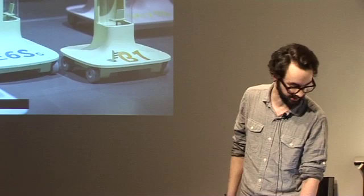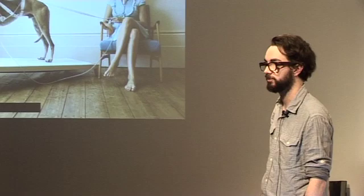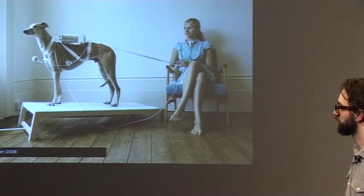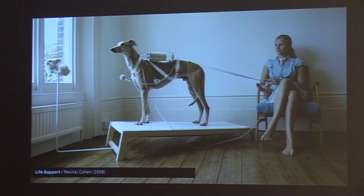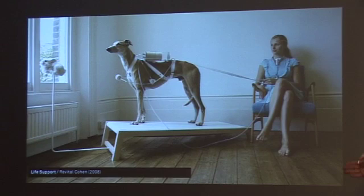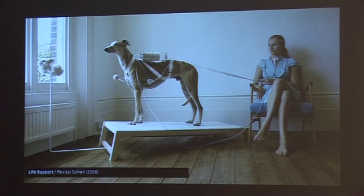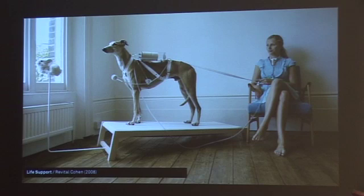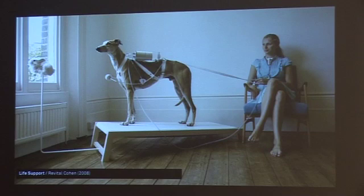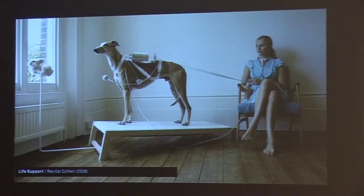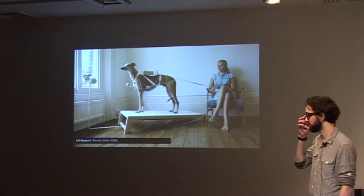This is also a good example: Life Support by Revital Cohen, now one half of Cohen van Balen. In the words of Benedict Singleton, design is a trap — it's the rearranging of various factors and criteria we already understand to develop a new outcome. In this instance: dogs chase rabbits; when the dog chases a rabbit its blood flow increases; you attach that to a dialysis machine, then plug it into someone who needs kidney dialysis. The three things themselves are entirely understood, but you put them together and you end up with a brand new proposal. Design is therefore less about creating new things, so much as rearranging things we already have for new and unexpected outcomes.